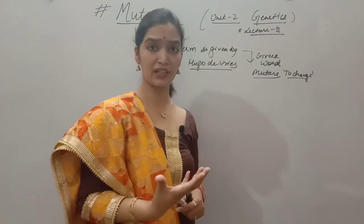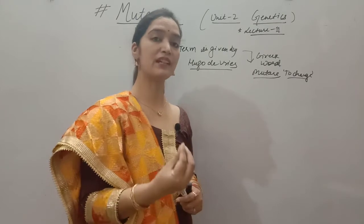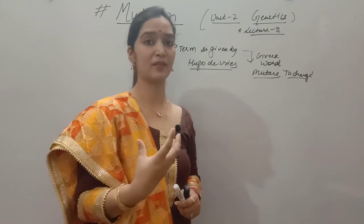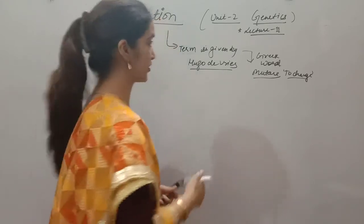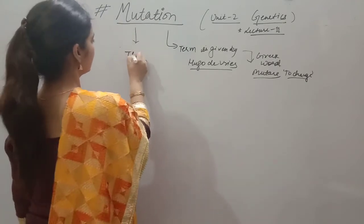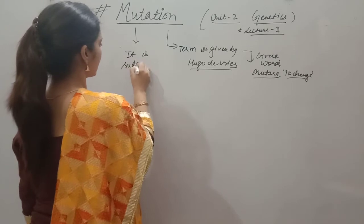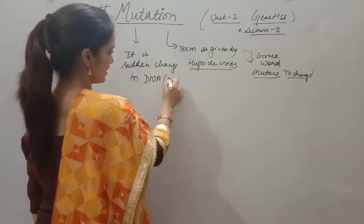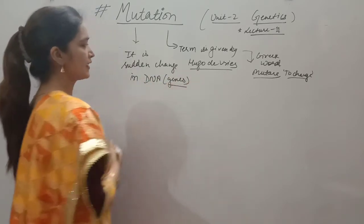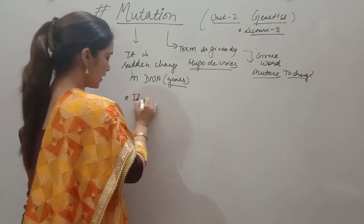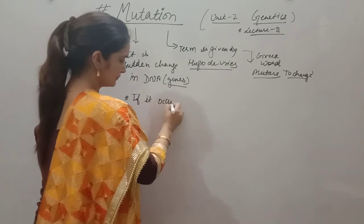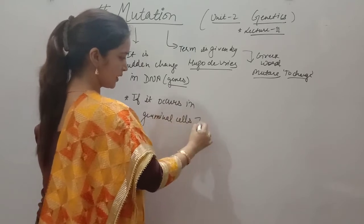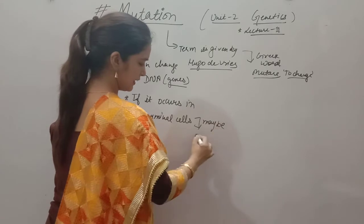If mutation occurs in somatic cells, it may not be inheritable and may not transfer to the next generation. But if these changes occur in germinal cells, then the mutation will be inheritable and the change will transfer to the next generation. So mutation is a sudden change in DNA/genes, and if it occurs in germinal cells, it may be inheritable.